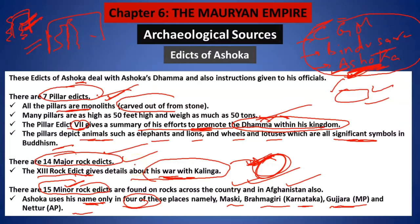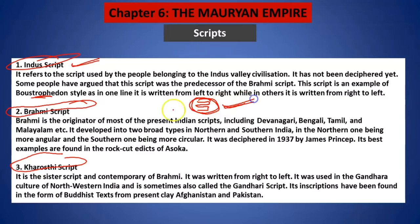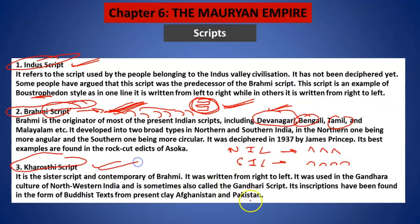Now let us come back to the question about Brahmi, Kharosthi, and Indus script — what is the difference between the three? Indus script we have already discussed, where writing goes from left to right, then right to left, then left to right — boustrophedon style. Brahmi script is the most popular script of our Indian culture. Hindi, Bengali, Tamil, Malayalam — all of them have branches from Brahmi script. One important difference: in north Indian languages the script is angular in shape, whereas in south India it is circular in shape.